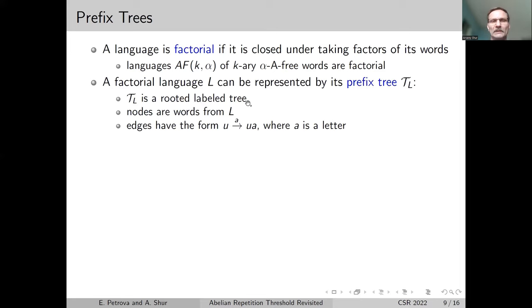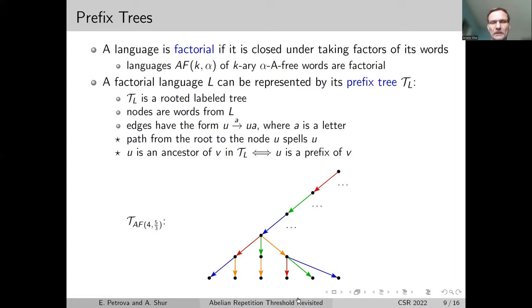Every factorial language can be represented by its prefix tree - a rooted labeled tree where nodes are words from our language and edges reflect appending a letter on the right to a word. Let's consider an example. This is a fragment of the tree of the abelian quaternary language which avoids the exponent 5/3. Our alphabet is the alphabet of colors: red, green, blue, and orange. This fragment starts from the path red, green, blue.